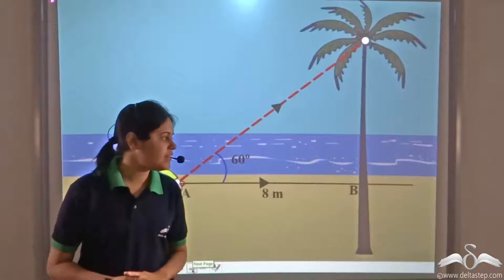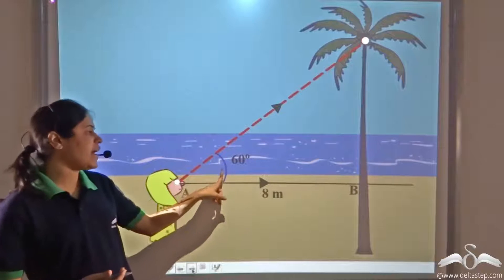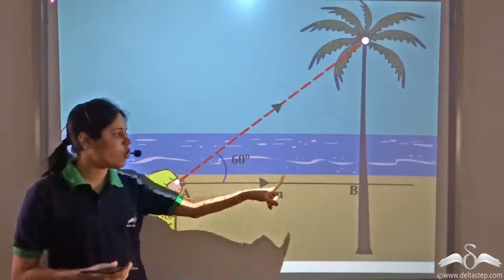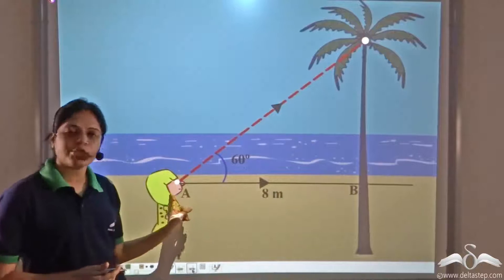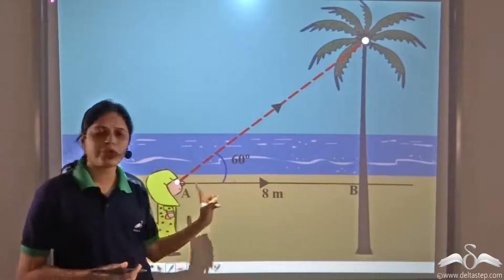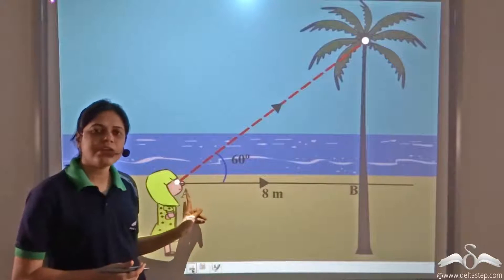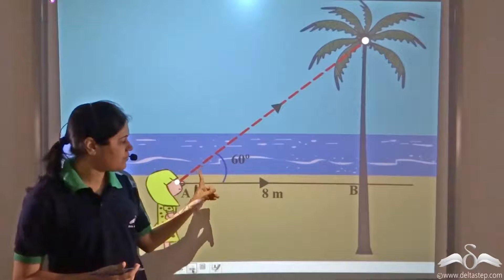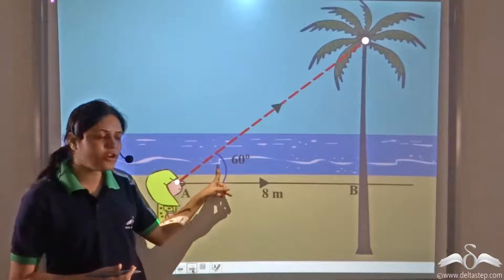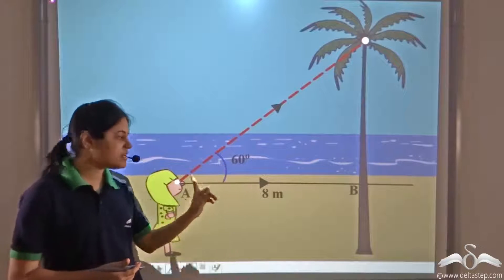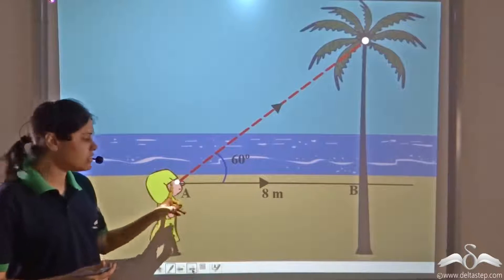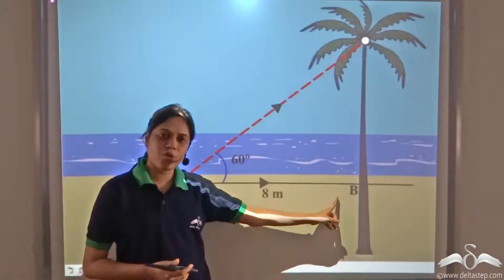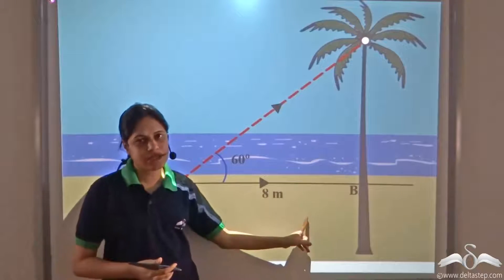For that, we need to find the angle of elevation and the distance of the object from the point of observation — that is the horizontal distance, which can be very easily measured. So we needed two things: one is the angle of elevation, and second is the horizontal distance from the point of observation to the object, which could be measured easily.